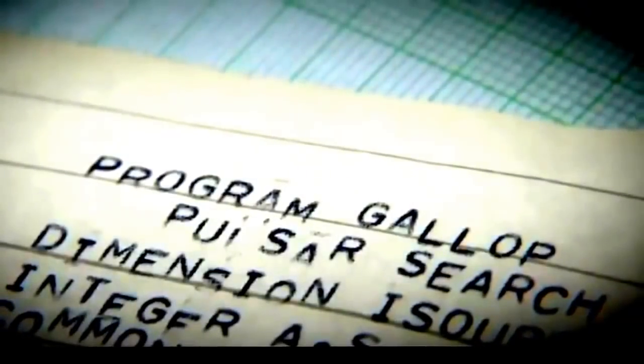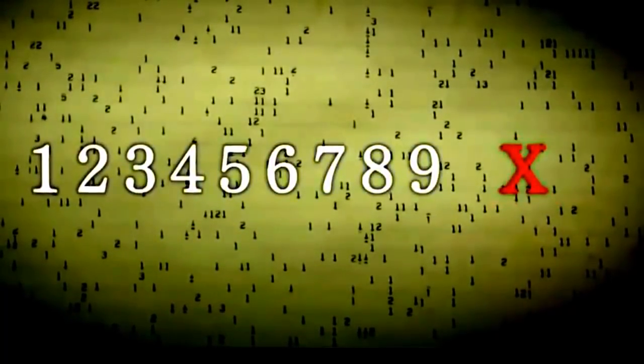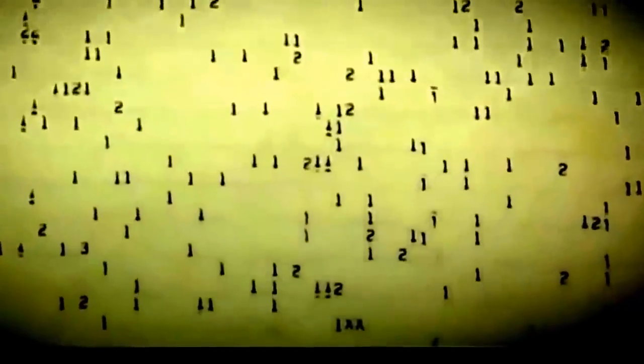Gallup worked splendidly, capturing and analyzing radio waves in rapid succession. Here are the computational results. Pulses were assigned number values in order of magnitude from one to nine. The strongest pulses of all were labeled X. And here is the much sought after X.